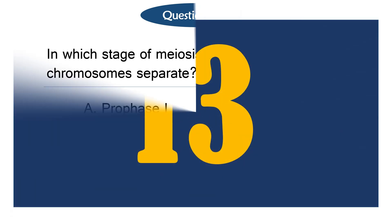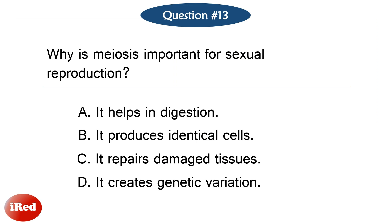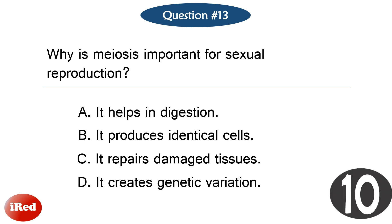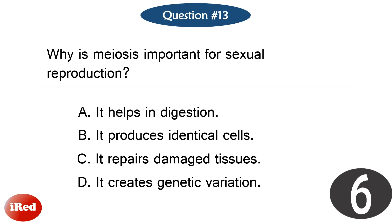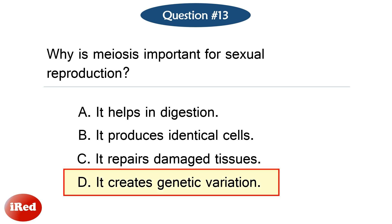Question number thirteen. Why is meiosis important for sexual reproduction? The correct answer is letter D: it creates genetic variation.